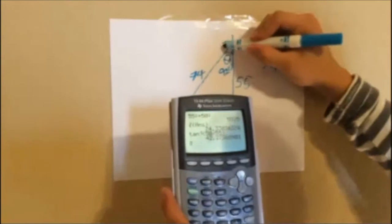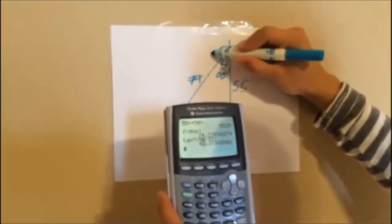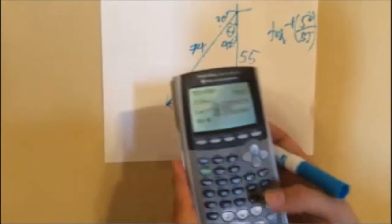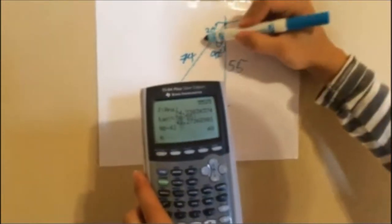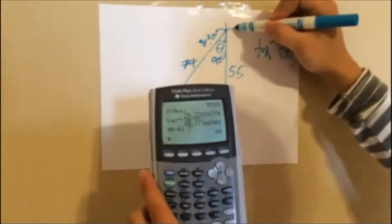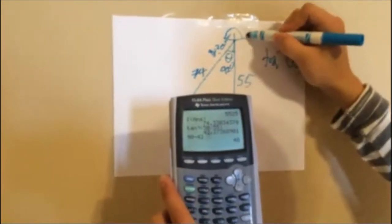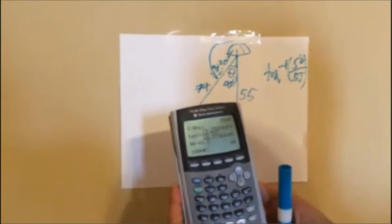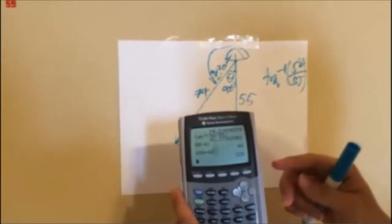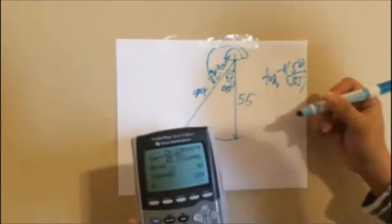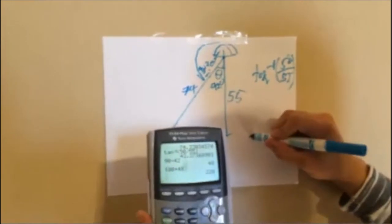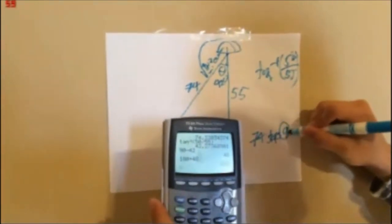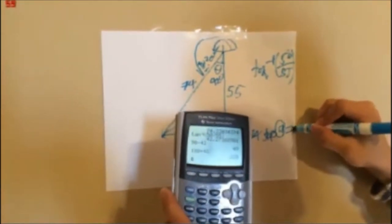So I need to subtract that from 90 to get the reference angle: 90 minus 42 equals 48 degrees. Then I add 180 to 48 to get the full bearing: 180 plus 48 equals 228 degrees. So the resultant vector would be 74 steps at 228 degrees.